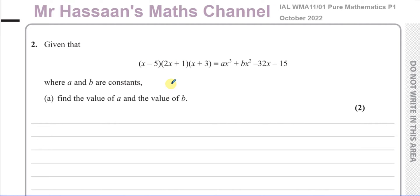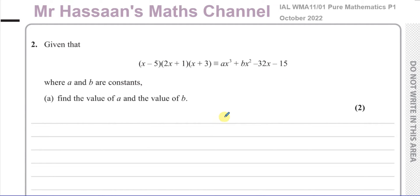That would be fine and you would end up with the right answer, there's no problem with that. But it's much easier in this type of question where we only have to find the coefficients of x cubed and x squared. It's much easier for us to just think a little bit and work out the coefficients without having to go through the whole expansion. What we can do is a little shortcut.